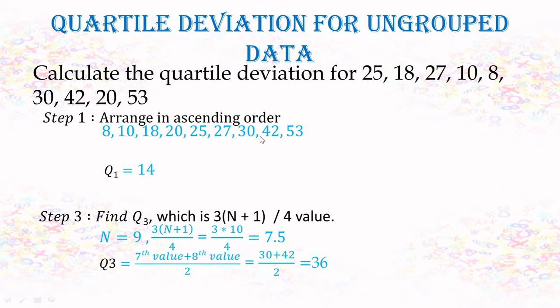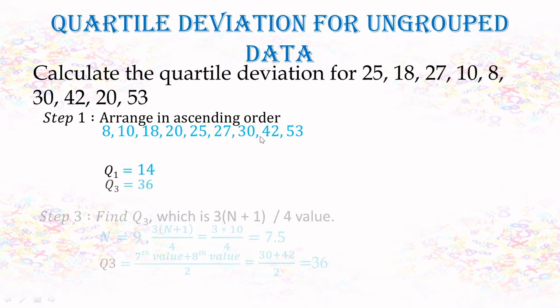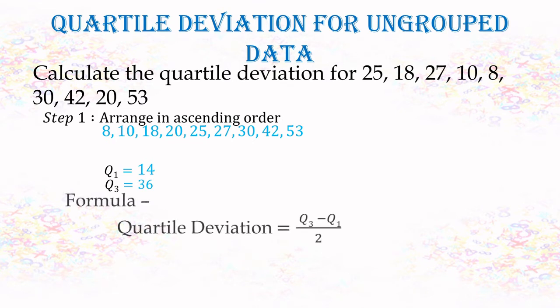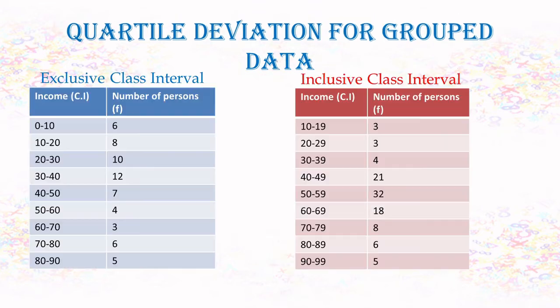The seventh and eighth values are 30 and 42, the average of which is 36. So Q3 equals 36. Substituting into the formula, quartile deviation equals Q3 minus Q1 divided by 2, giving 11 as the quartile deviation for this data. To get the coefficient, we use Q3 minus Q1 divided by Q3 plus Q1.